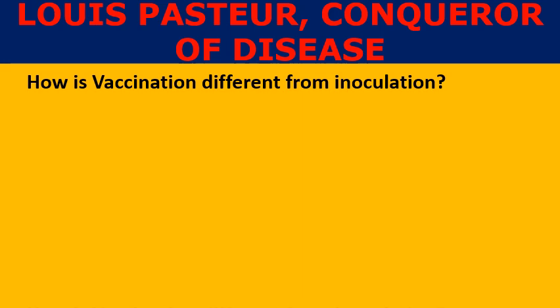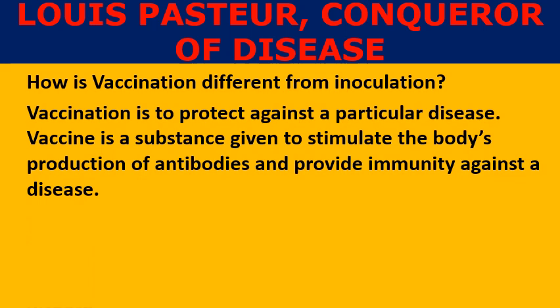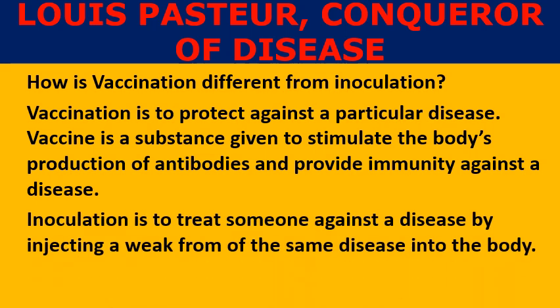How is vaccination different from inoculation? Vaccination is to protect against a particular disease. A vaccine is a substance given to stimulate the body's production of antibodies and provide immunity against disease. Whereas inoculation is to treat someone against a disease by injecting a weak form of the same disease into the body.